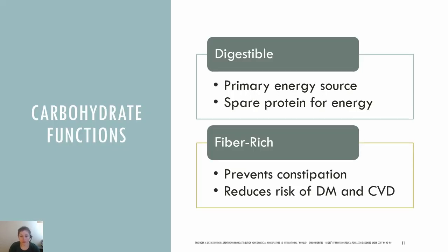Let's review the functions of carbohydrates. Digestible carbohydrates are a primary energy source, as the central nervous system and red blood cells derive almost all of their energy from glucose. If you don't consume enough carbohydrates, your body can enter a state of ketosis, and it will break down amino acids in muscles and other organs to make glucose. Protein has many other vital functions in the body. Soluble fiber, in particular, helps to reduce the absorption of cholesterol.